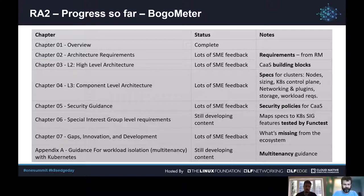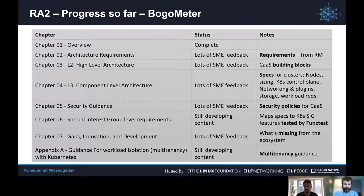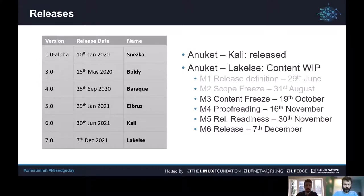Finally, chapter seven discusses what is missing — the gaps, innovation projects being tracked, and developments happening in the ecosystem. New items come from various actors and contributions are welcome. The document finishes with an appendix on multi-tenancy, covering separation of workloads on the same platform so they can be isolated and not interfere with each other on a common platform.